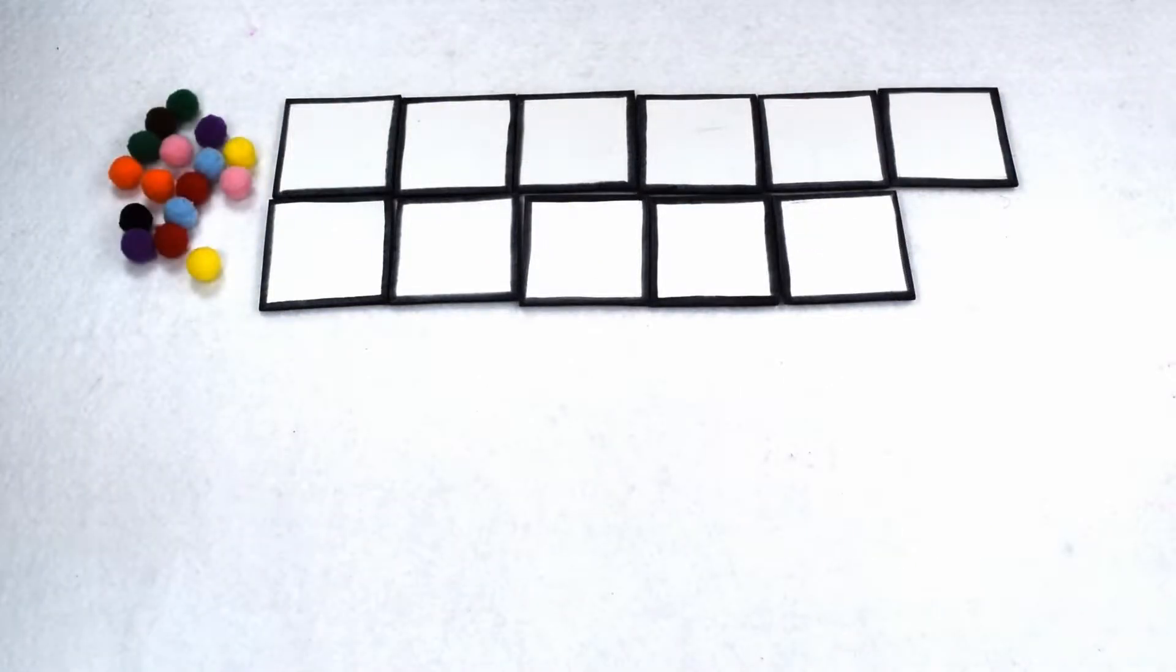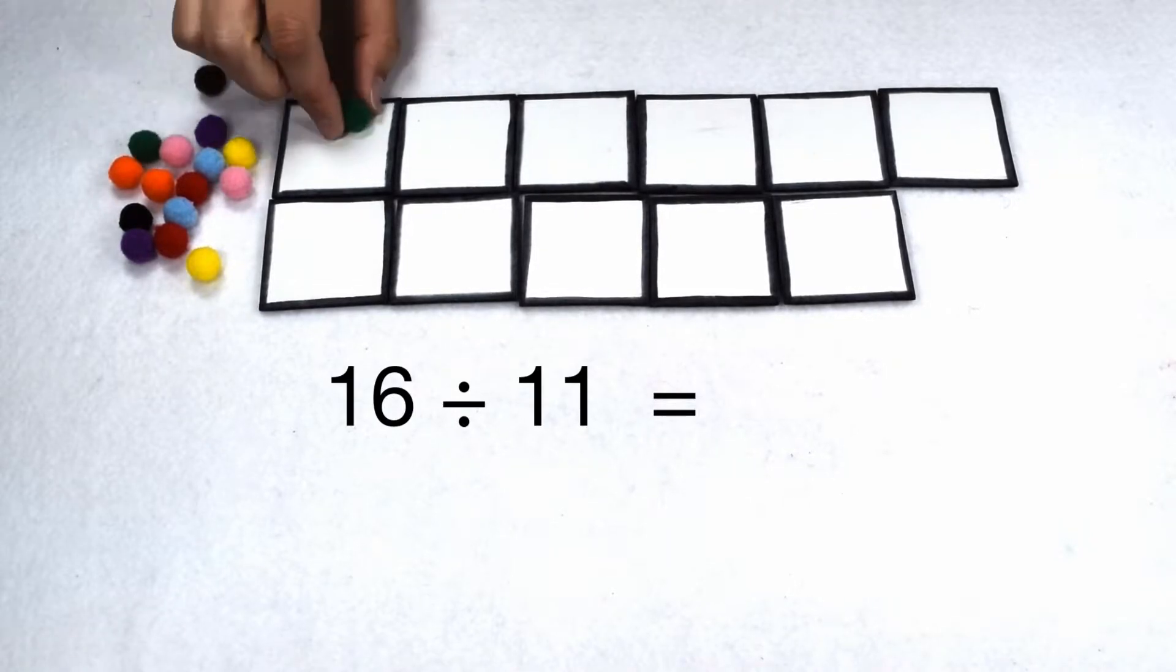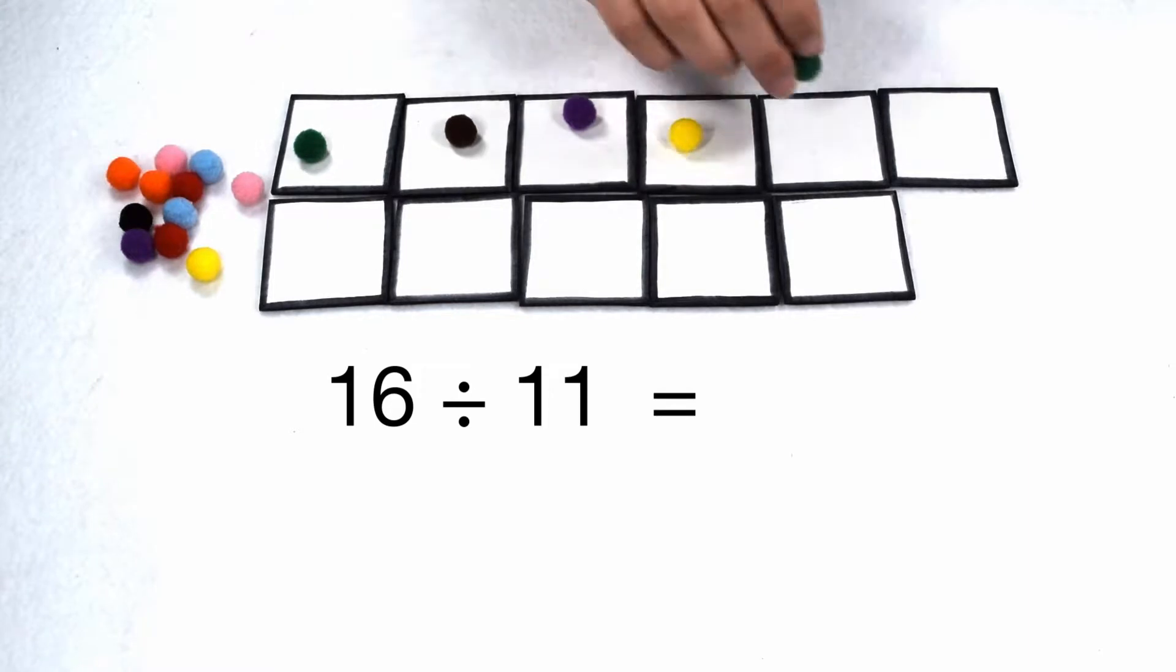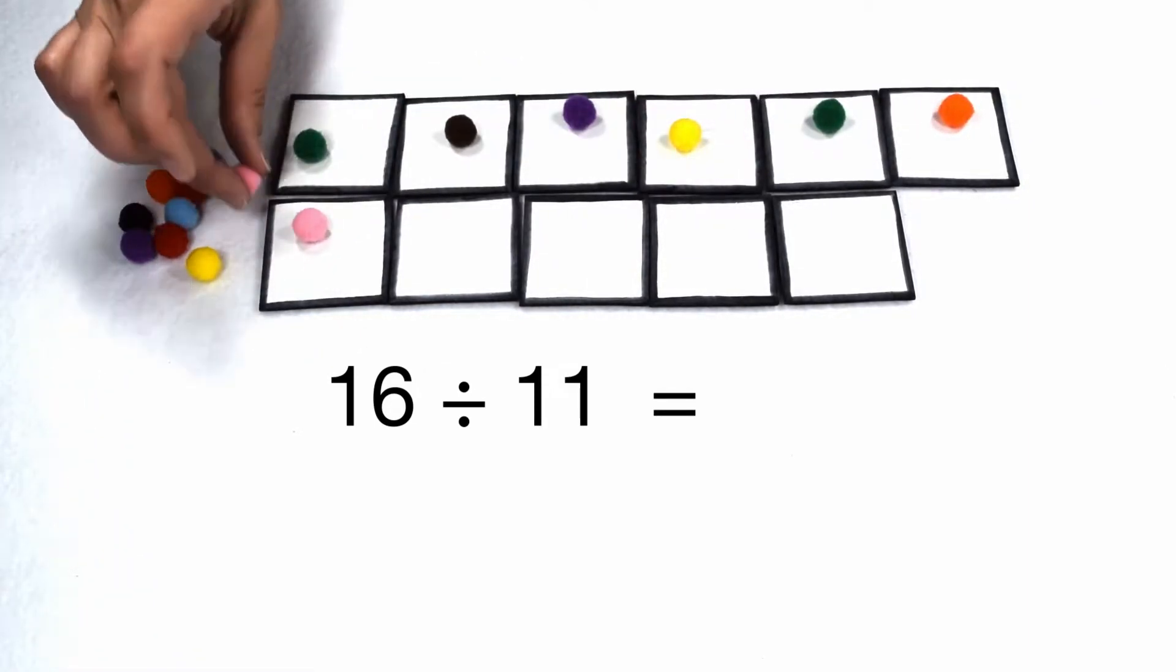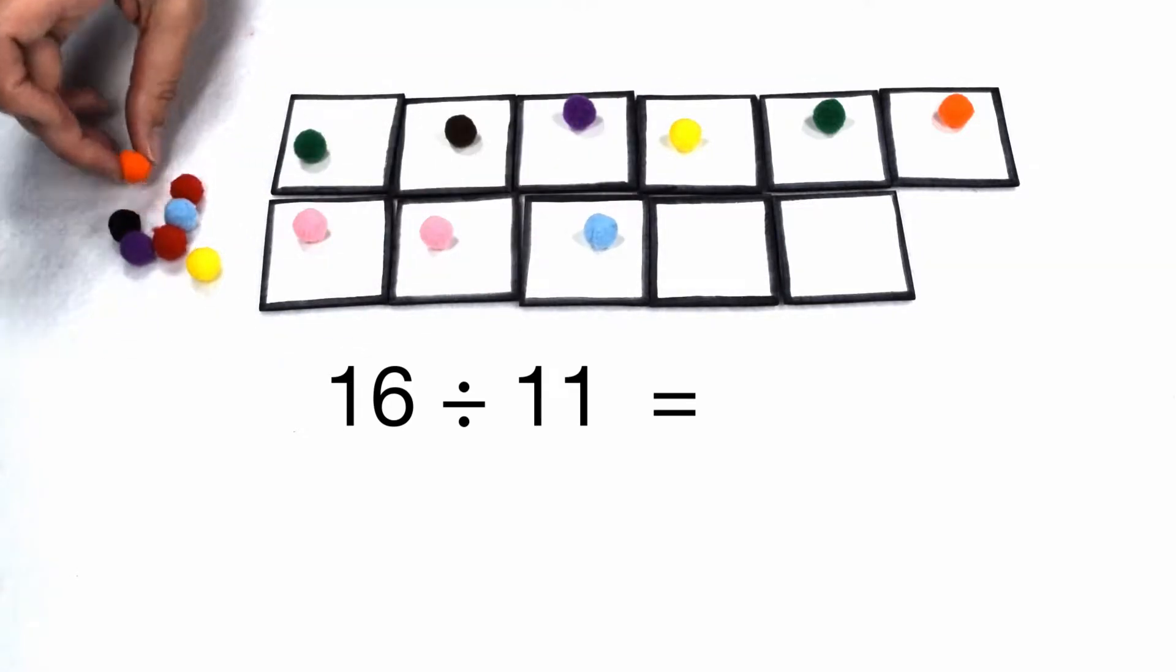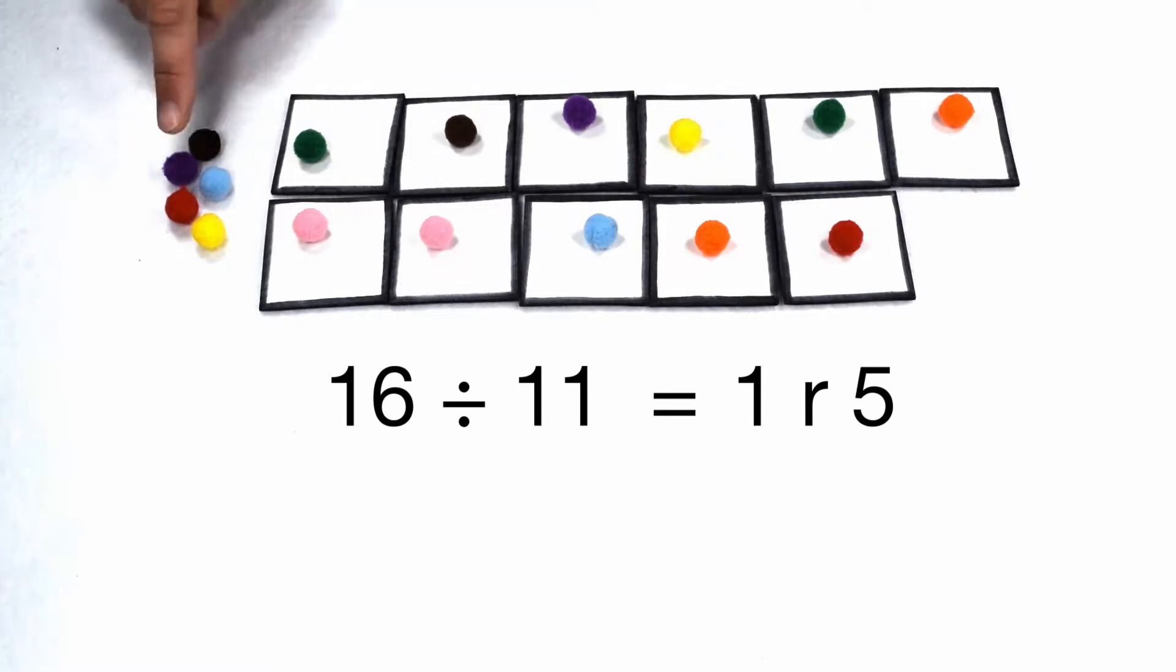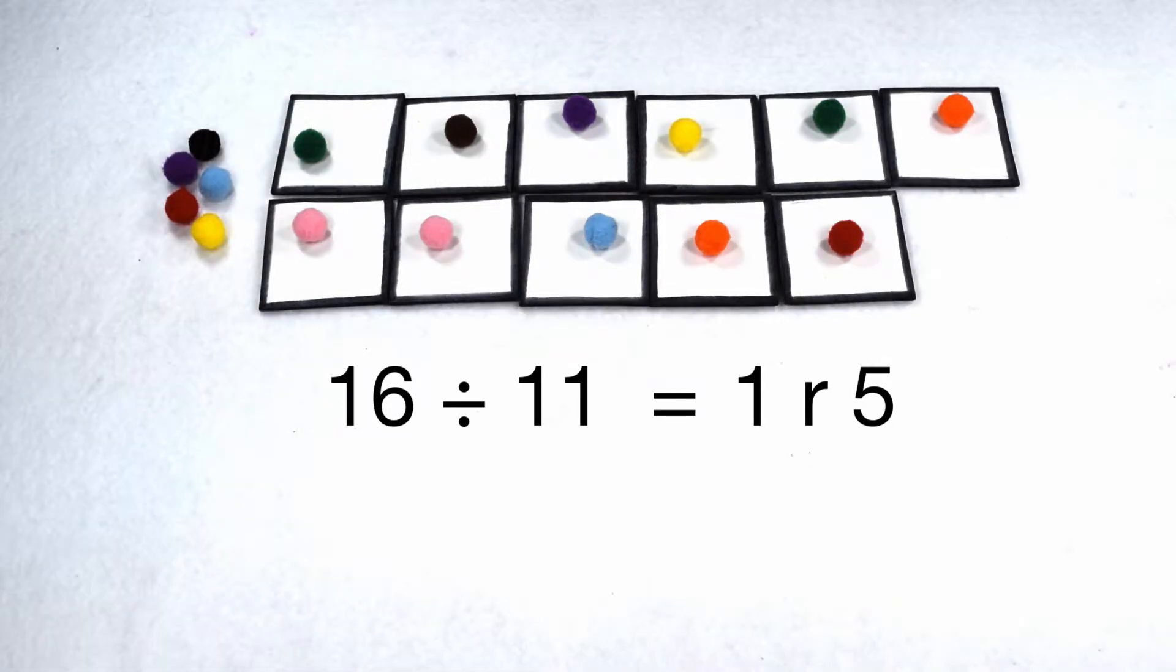Let's test this out again with a different value. Here we have a dividend of 16 that we want to split into 11 groups. If 16 is divisible by 11, then I should be able to put the same number of items in each group and not have any remainders. As we go through, we can see that we can put one item into each group, but then I have five items left over. I can't put these five items evenly into these 11 groups. So 16 divided by 11 gives me one remainder 5.